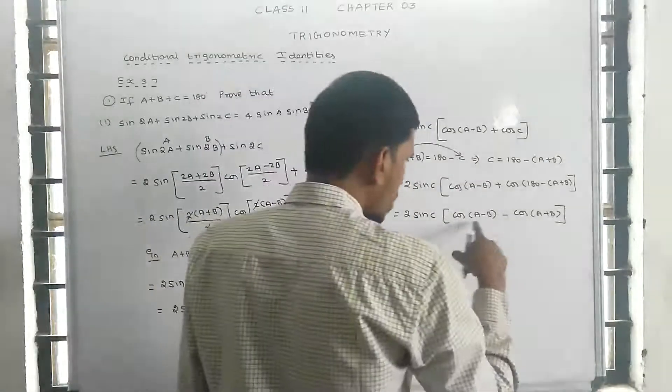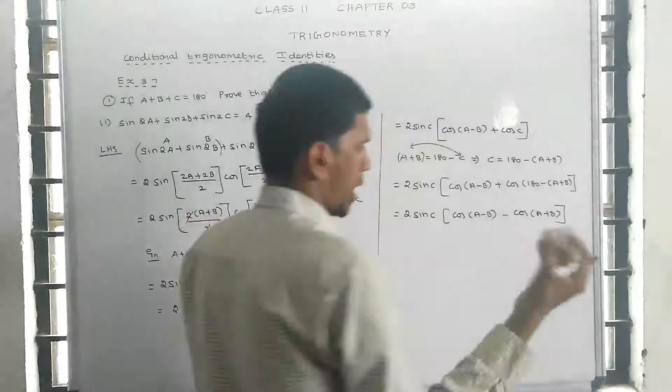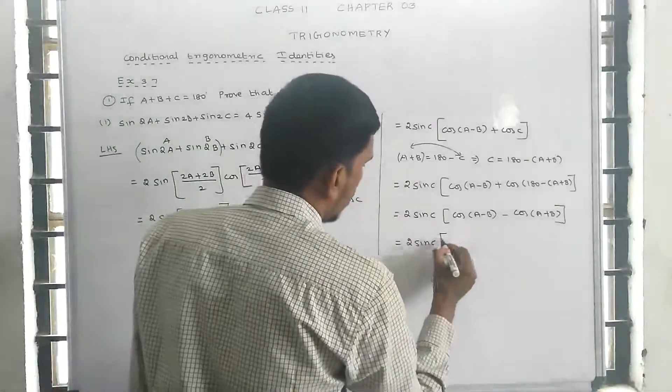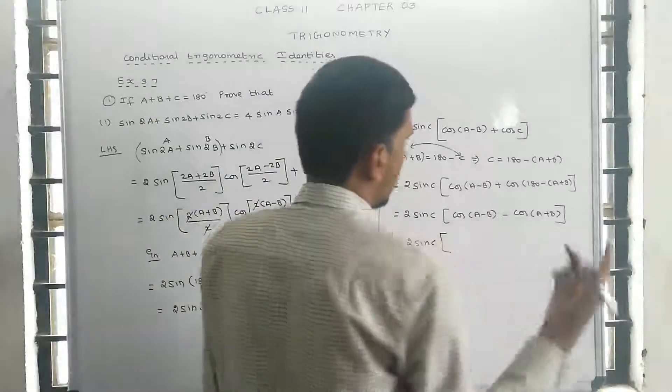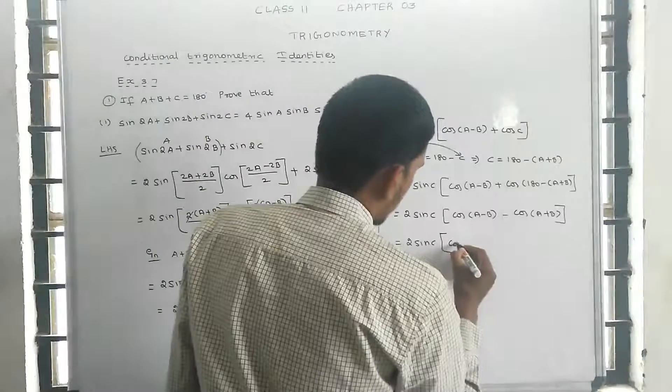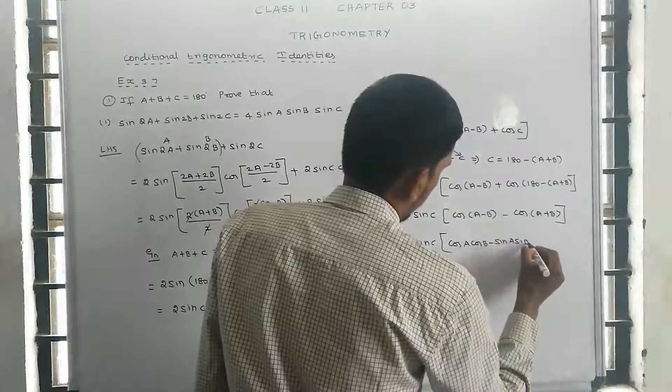Applying the cos(a+b) formula: cos(a+b) = cos a cos b - sin a sin b, and cos(a-b) = cos a cos b + sin a sin b.